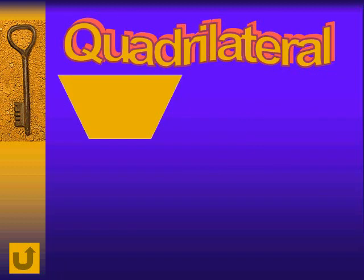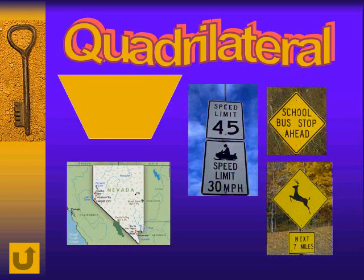Quadrilateral, by the Greek naming system, could also be called a tetragon — tetra meaning four (t-e-t-r-a), gon. And here are several examples.